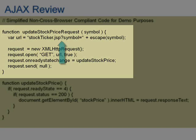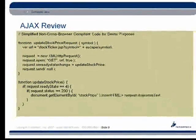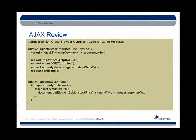The query string is denoted in a URL by the question mark followed by name-value pairs. That's just a quick review of what it looks like to create our callback function and how to create an XMLHttpRequest object and send it off.